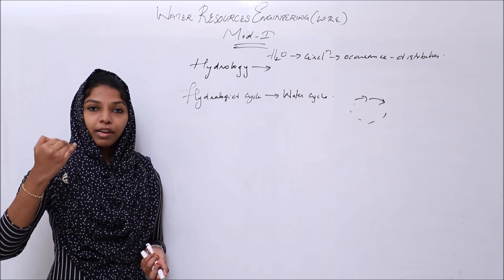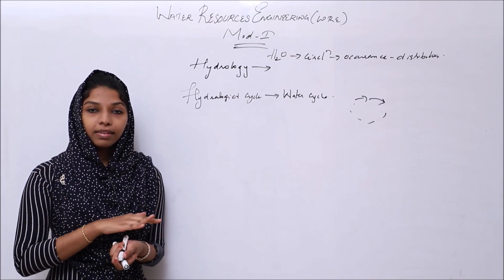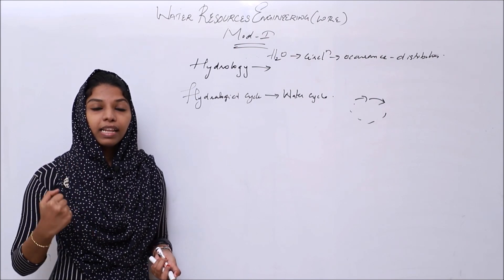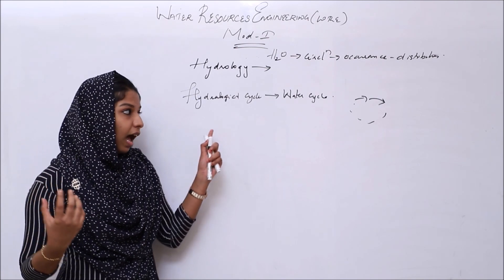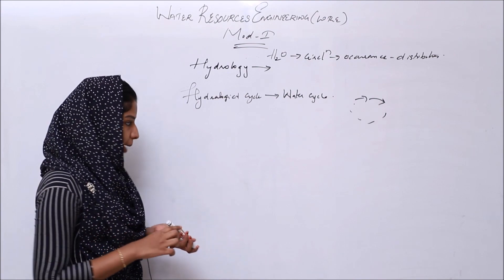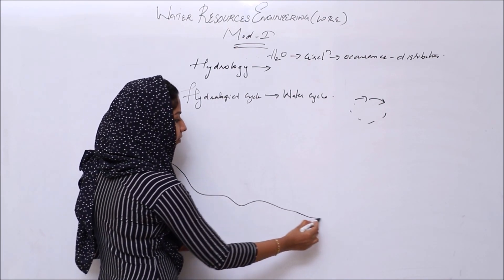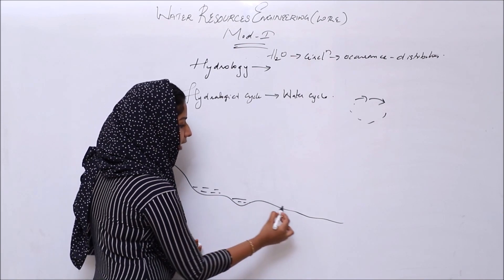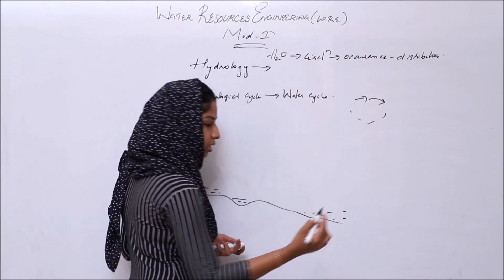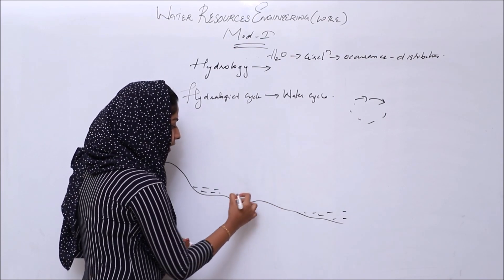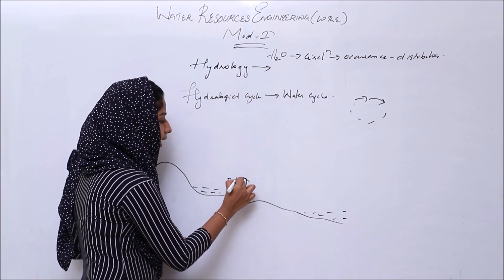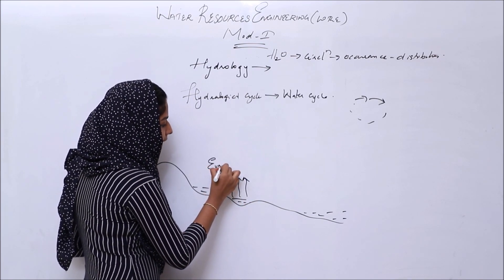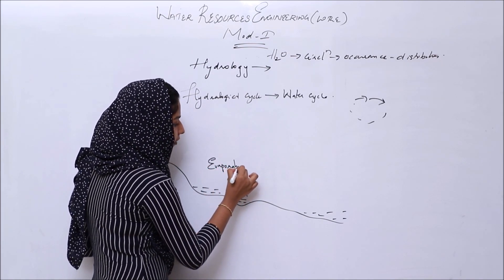Where does the precipitation go? Where do the water resources come from? This is the continuous hydrological cycle. We are now looking at surface water resources. The vapor is going to be converted at the surface through the process of evaporation.